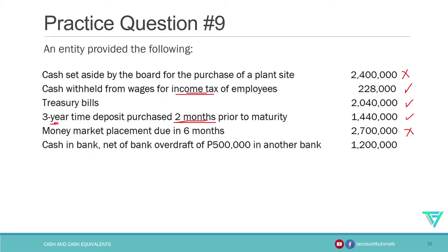Cash in bank net of bank overdraft of five hundred thousand in another bank. If the bank account that has a positive balance is maintained in a different bank, the overdraft cannot be offset from that bank account. So the overdraft should be reported as a current liability, and we add five hundred thousand to get the adjusted cash in bank balance.